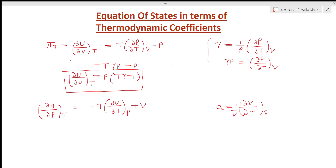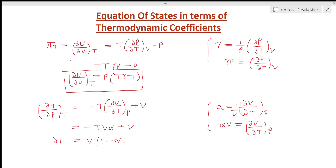Alpha is defined as (1/V)(∂V/∂T) at constant pressure, so alpha·V = (∂V/∂T) at constant pressure. Substituting this into the second equation of state gives minus T·V·alpha plus V. Taking V common gives V(1 - αT). So (∂H/∂P) at constant temperature equals V(1 - αT). This is the second equation of state expressed in terms of alpha. These are the two equations of state in terms of thermodynamic coefficients.